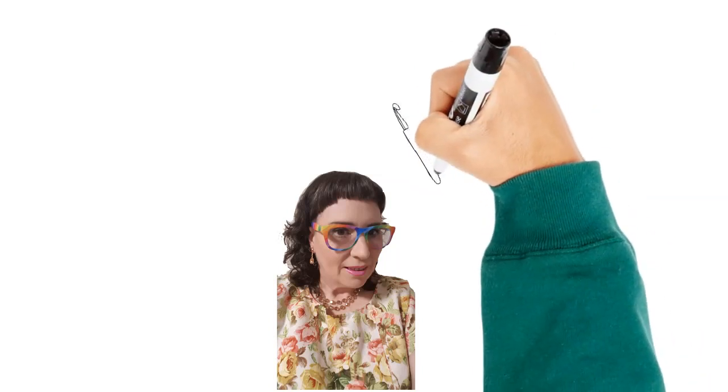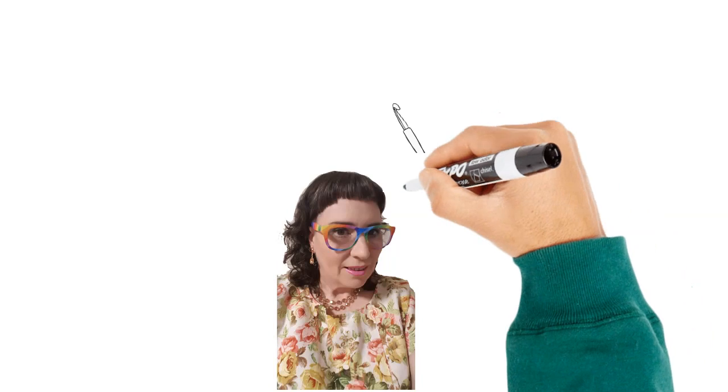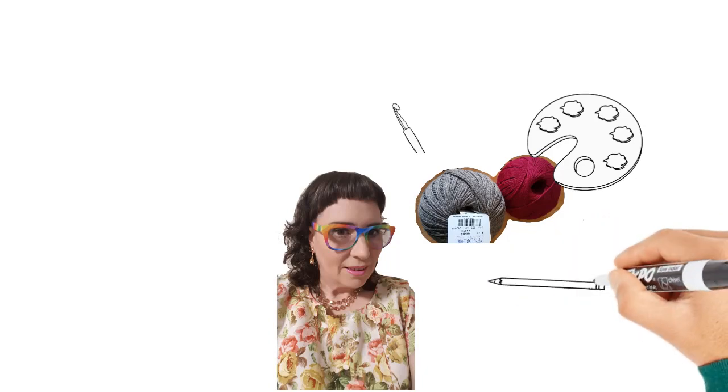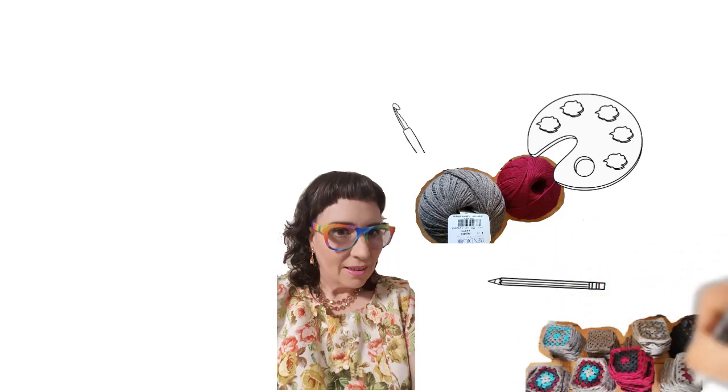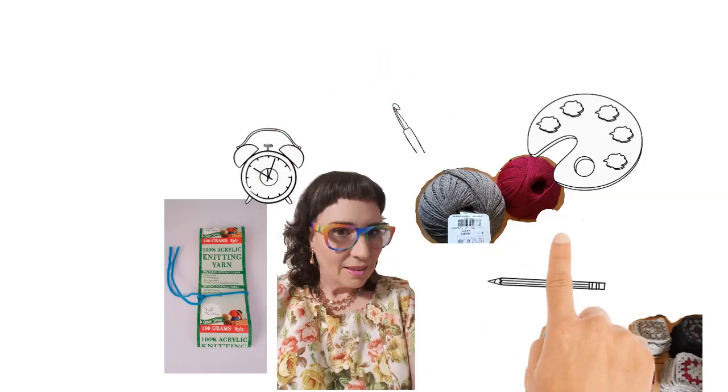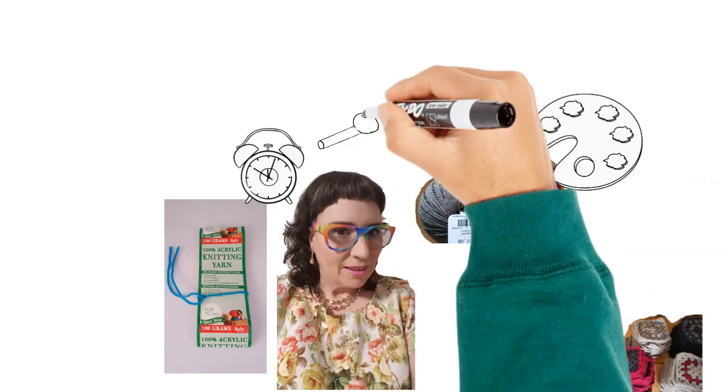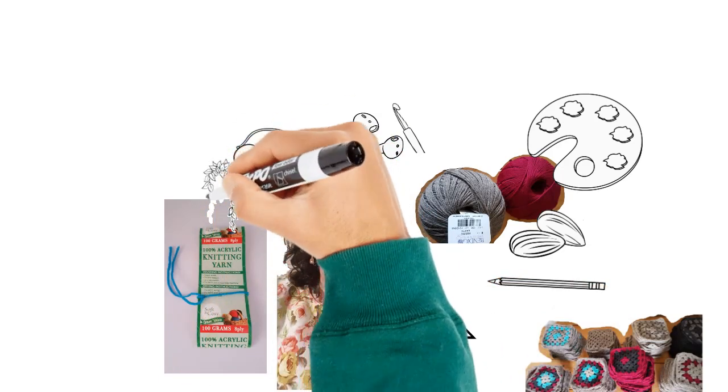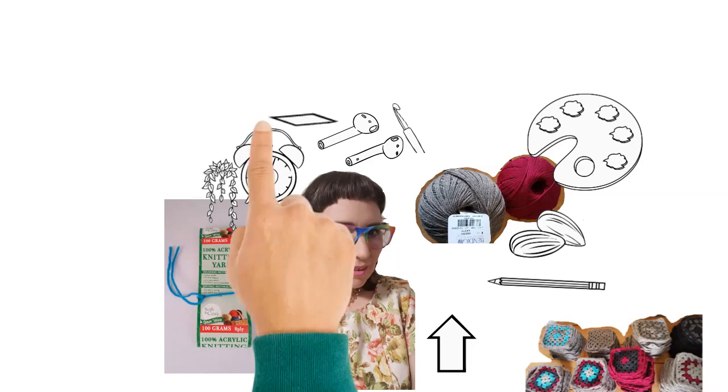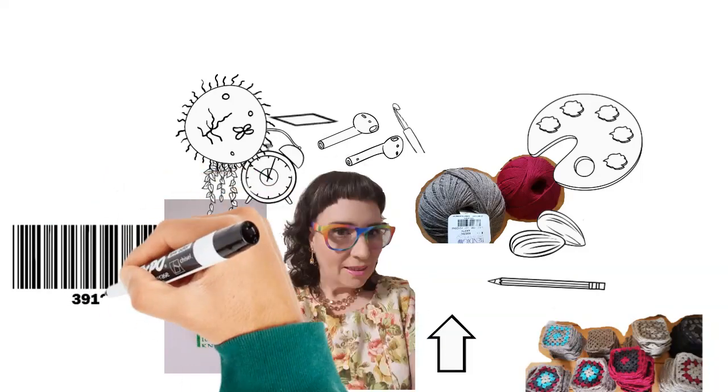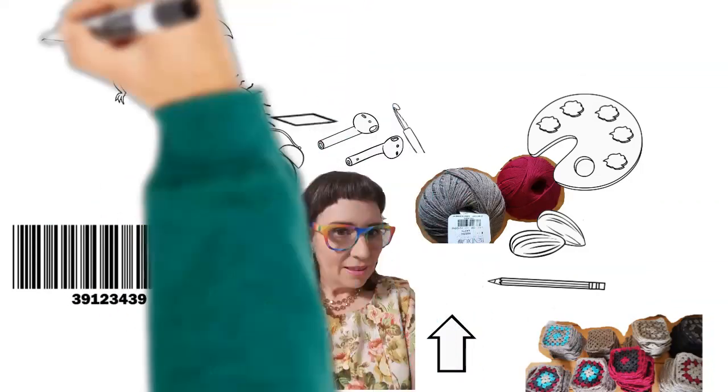The hand is now drawing the same picture of Megan and it's drawing a crochet hook, some balls of wool, an art palette, a pencil, some granny squares, a yarn label, an alarm clock, some almonds, some earbuds, an arrow, a plant, a germ, and a barcode all on top of each other.